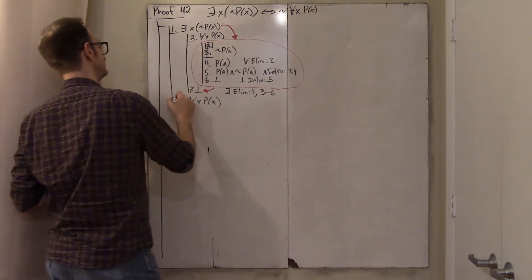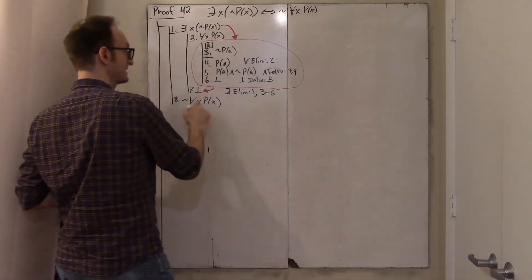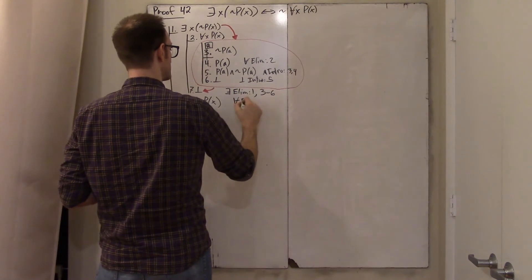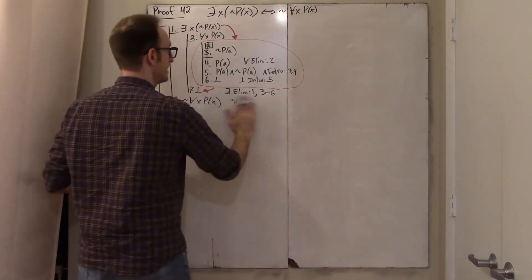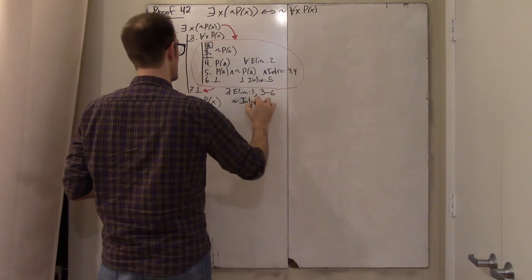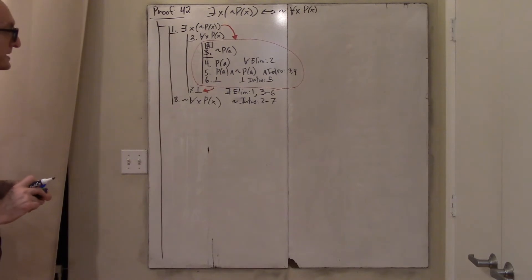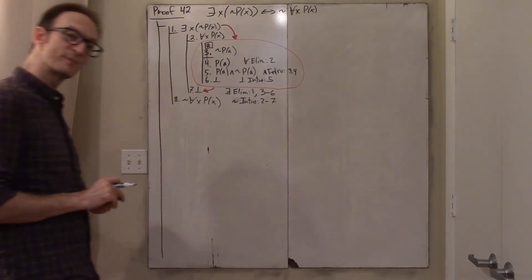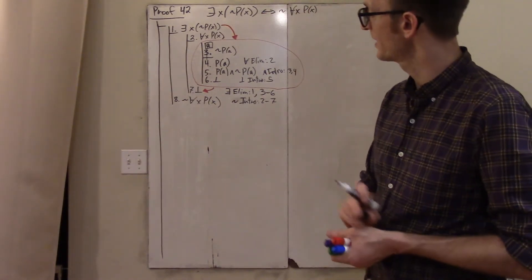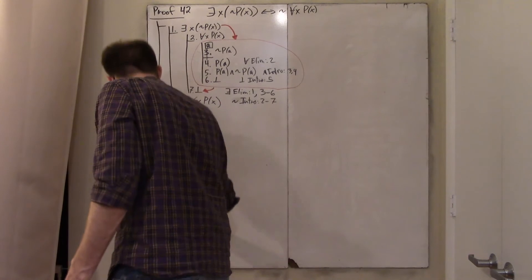The justification for line seven is existential elimination — I eliminated the existential in line one, using it in lines three through six. I get the contradiction, conclude it's not the case that everyone is pretty: negation intro, lines two through seven. That direction was straightforward — at every moment I knew exactly what to do.